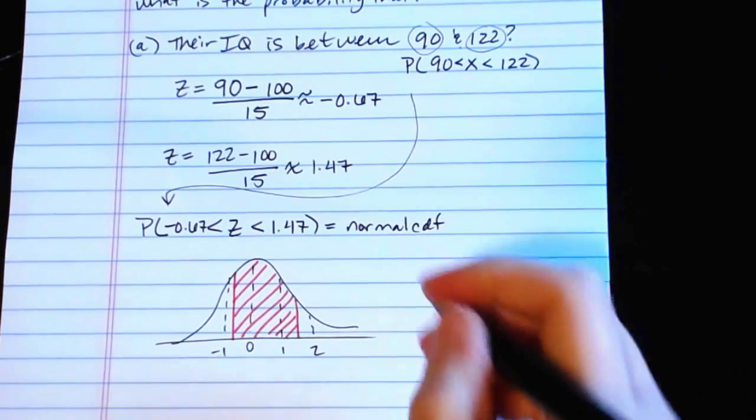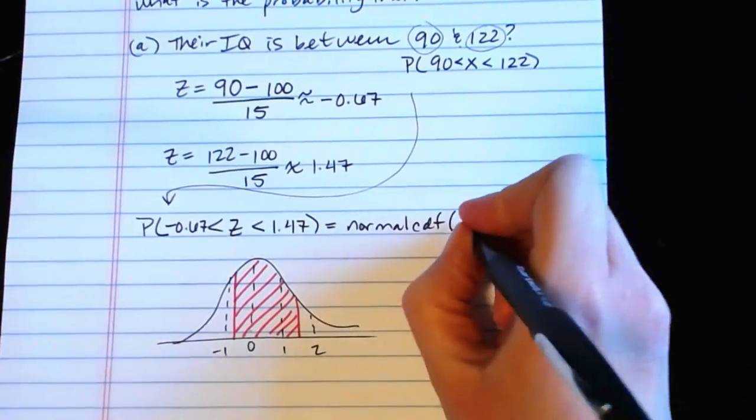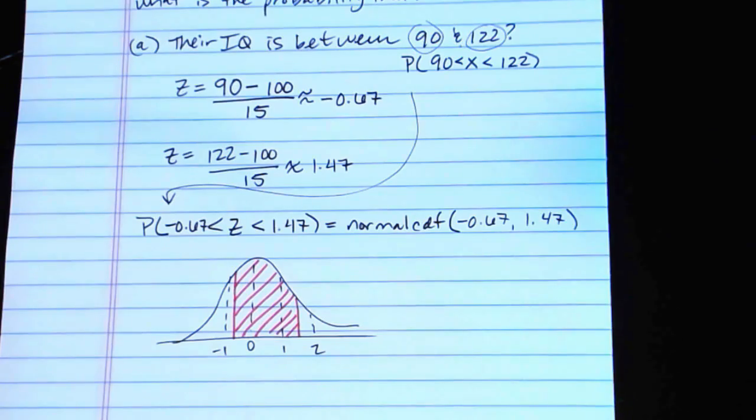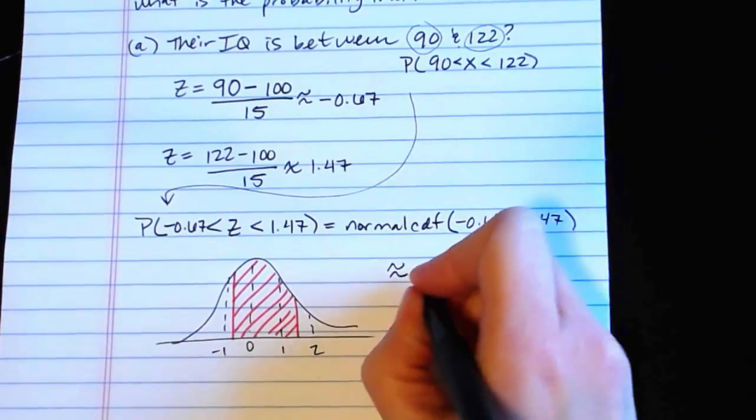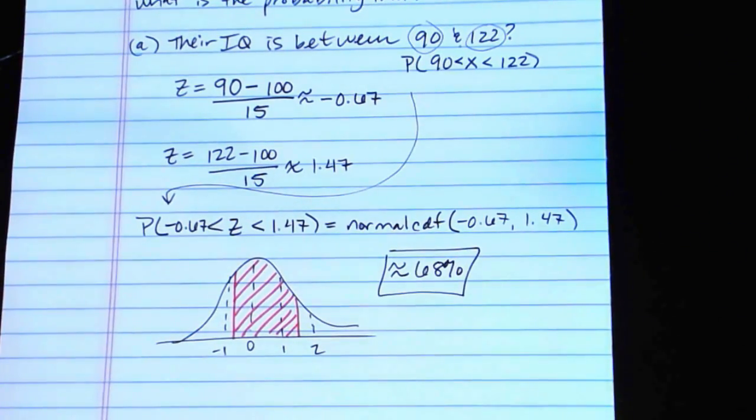So then we're just going to plug that into normal CDF in the calculator, the way that I showed you in the other video. So we'll go second vars to our distributions menu, select the second option, normal CDF, put in your values, negative 0.67 and 1.47, and crunch that through, and we get about 68%. Okay, so about 68% chance that a randomly selected individual will have an IQ between 90 and 122.